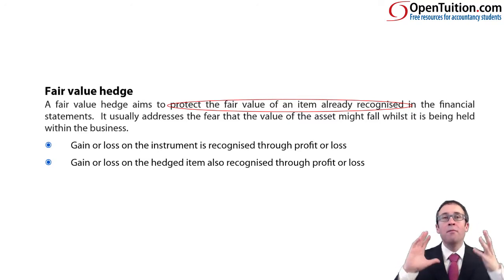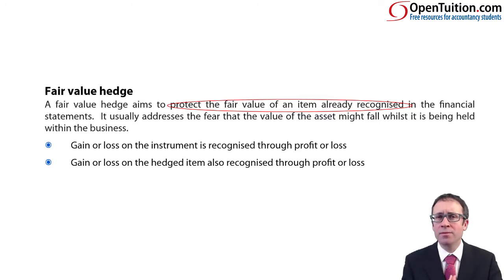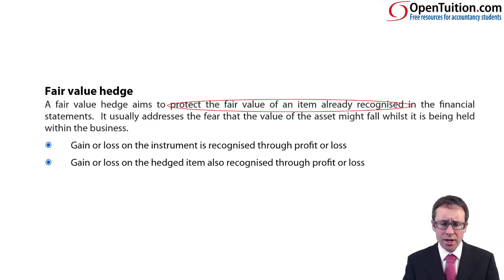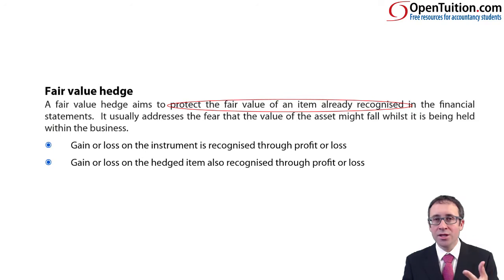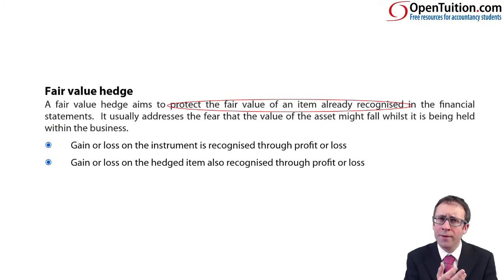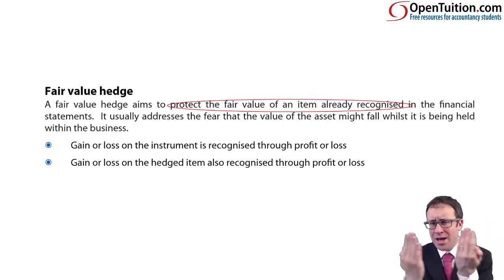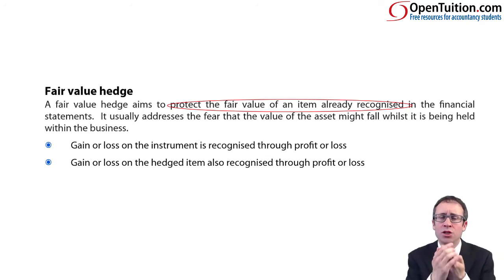If that's the case, it's much simpler in terms of the accounting treatment — not as complex as what you have with your cash flow hedge. Here, the gain or loss on the instruments, your derivative, goes through profit or loss. And then the fair value change on the items — the change in value of the asset or the change in value of the liability — the gain or loss goes through profit or loss as well. So hopefully, if it's perfectly effective, the gain or loss will equally offset each other, and you'll have a fixed price.